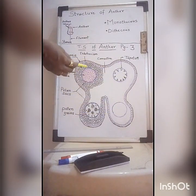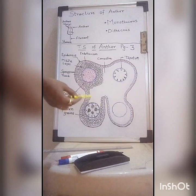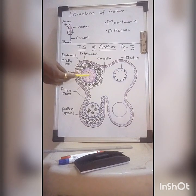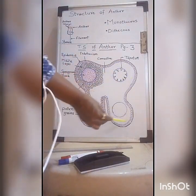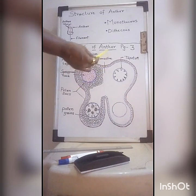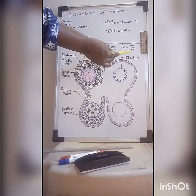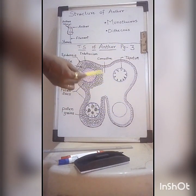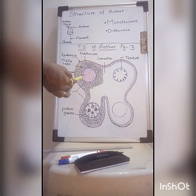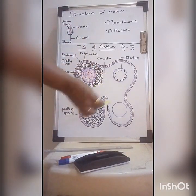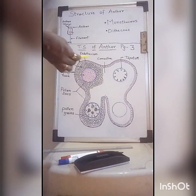This diagram of the TS of anther shows mainly four circles — four pollen sacs can be seen. Different layers of cells are present. This diagram is a little bit complicated; you can refer to page number three of the textbook. The entire diagram is filled with different layers of cells. Here, to avoid confusion, I have drawn only one part of it — the remaining parts are all the same.